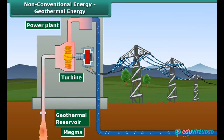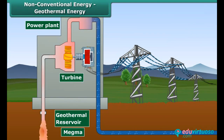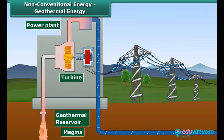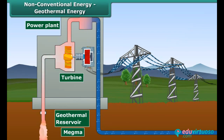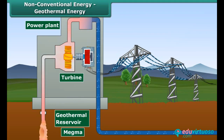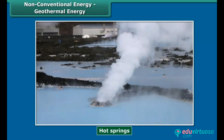Earth's heat is also a type of energy called geothermal energy. The temperature in the interior of the Earth rises steadily as we go deeper, and this heat energy can be used to generate power. Geothermal energy in the form of hot springs is also used for cooking.